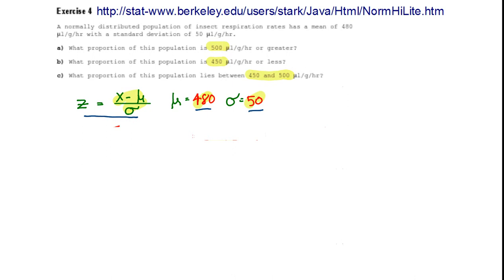With that information, we can use this equation here to transform any value into a value on the standard normal distribution, and then use our statistical tables to find out what proportion is in that particular region.